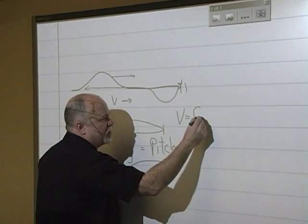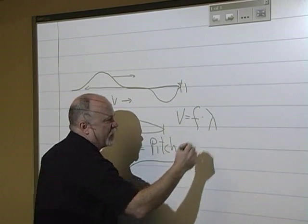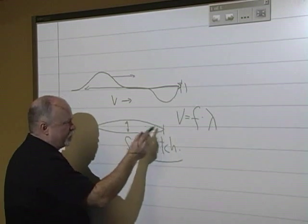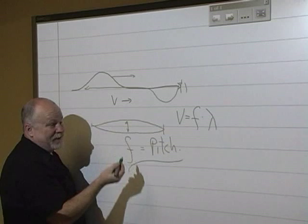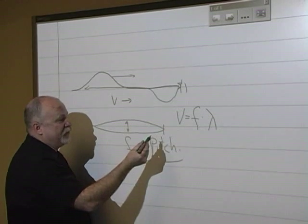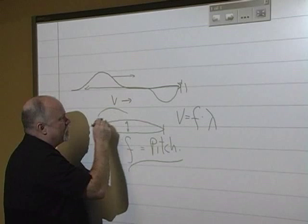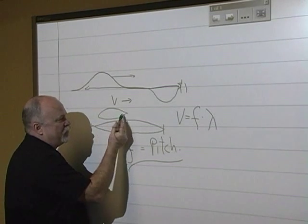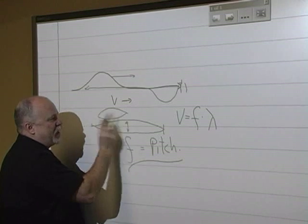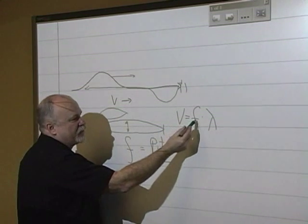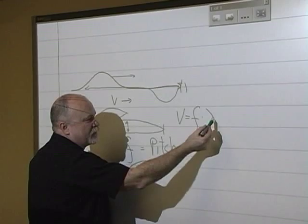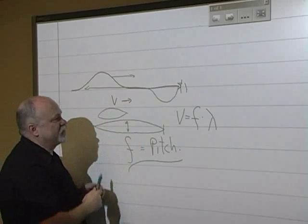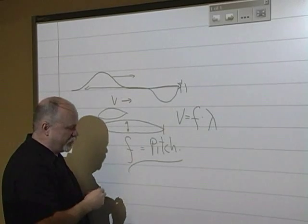Velocity equals frequency times wavelength, and wavelength is the length of the wave. If we're doing it on a string, it's pretty well determined by the length of the string. So if we get a shorter string, the wave has less distance to travel, so it can bounce back and forth at a higher frequency. A smaller wavelength equals a higher frequency, because the velocity depends on the mass-to-length ratio and the tension in the string.